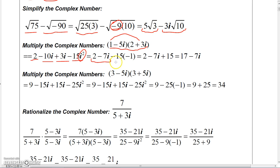So that becomes -15 times -1, and -15 times -1 becomes +15. And so now I can add the 2 to the 15 and get 17 - 7i, and there's the complex number that's the answer.